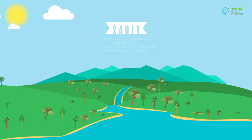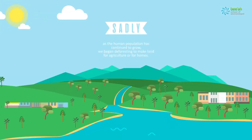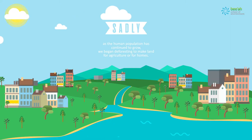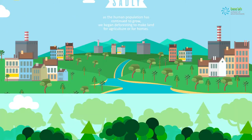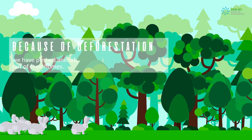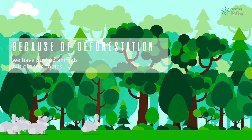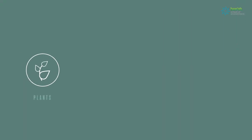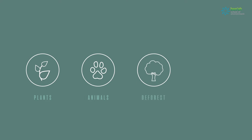Sadly, as the human population has continued to grow, we began deforesting to make land for agriculture or for homes. Because of deforestation, we have pushed animals out of their homes. How would you feel if someone kicked you out of your home? Extinction of plants and animals is a major worry if we continue to deforest and create pollution.